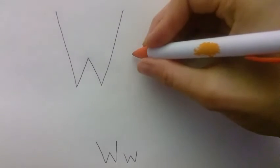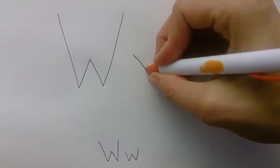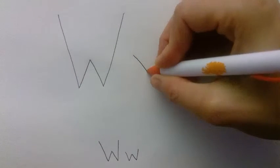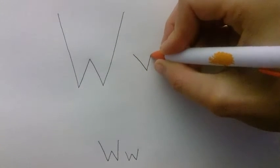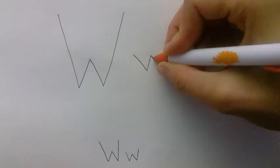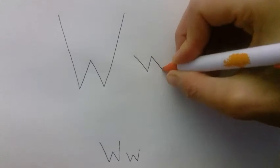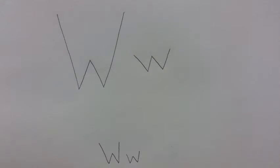Let's draw the lowercase W. Starting in the middle of your page, you draw a short diagonal line down, a short diagonal line up, a short diagonal line down, and a short diagonal line up, and that's your lowercase letter W.